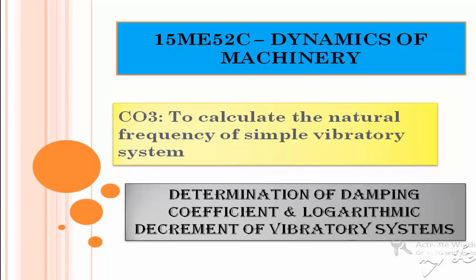Hi there students. When a damper is used in a vibratory system to reduce the amplitude of vibration every cycle, a terminology is raised named as damping coefficient, which is the ratio between damping force and damping velocity. Logarithmic decrement is the amplitude reduction factor — the logarithmic ratio of two consecutive amplitudes of any vibratory system. In this lecture video, we are going to determine the damping coefficient and logarithmic decrement of a vibratory system with an example.